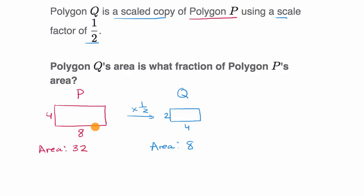And that makes sense, because when you scale the dimensions of the polygon by one half, the area is going to change by the square of that. One half squared is one fourth. And so the area has been changed by a factor of one fourth. Or another way to answer this question, polygon Q's area is what fraction of polygon P's area? Well it's going to be one fourth of polygon P's area.